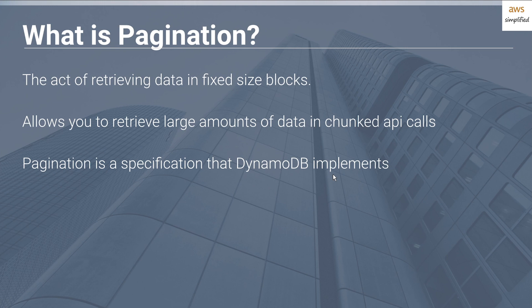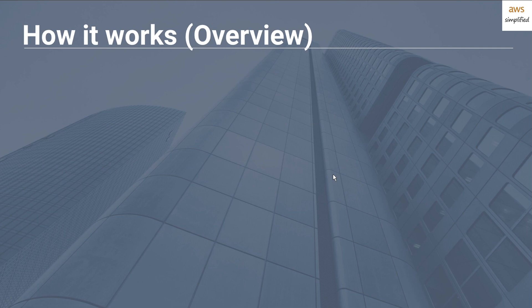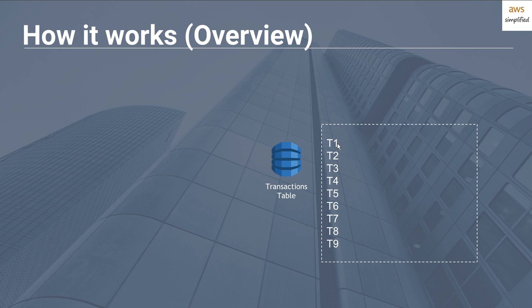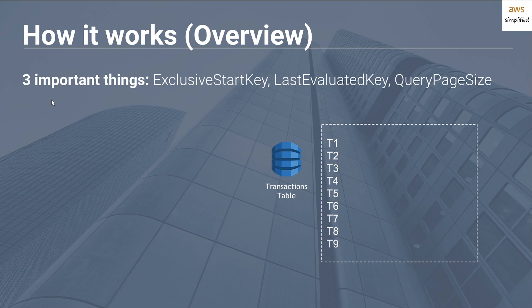Now let's talk about how pagination works in the context of DynamoDB — a high-level overview, not the under-the-hood details, but enough to get you started. Imagine we have a transactions table with nine records, T1 through T9, each with some JSON data. There are three important things when working with pagination in DynamoDB: exclusive start key, last evaluated key, and query page size.